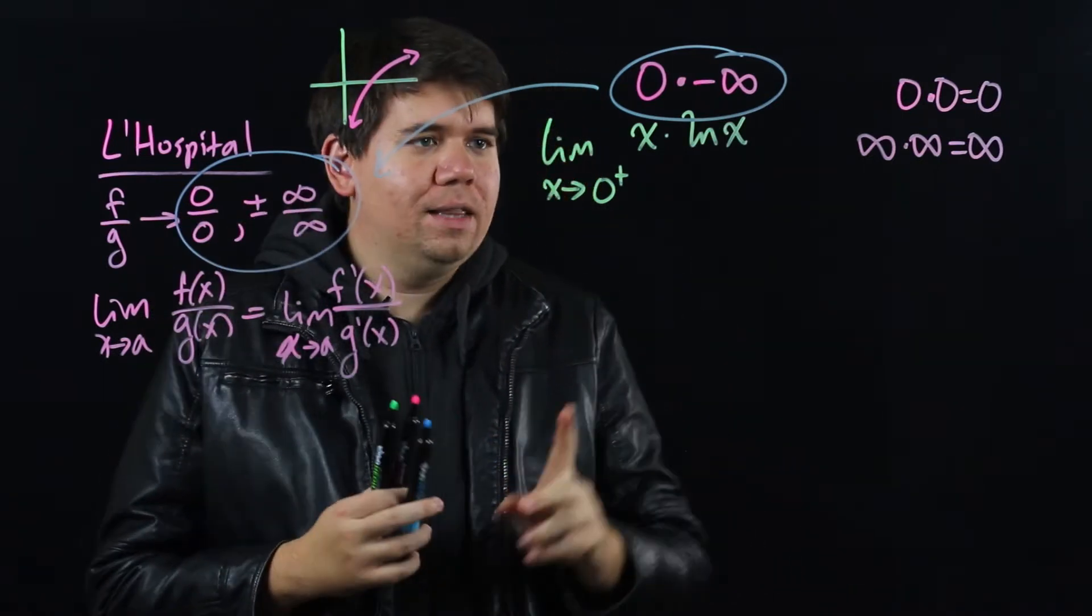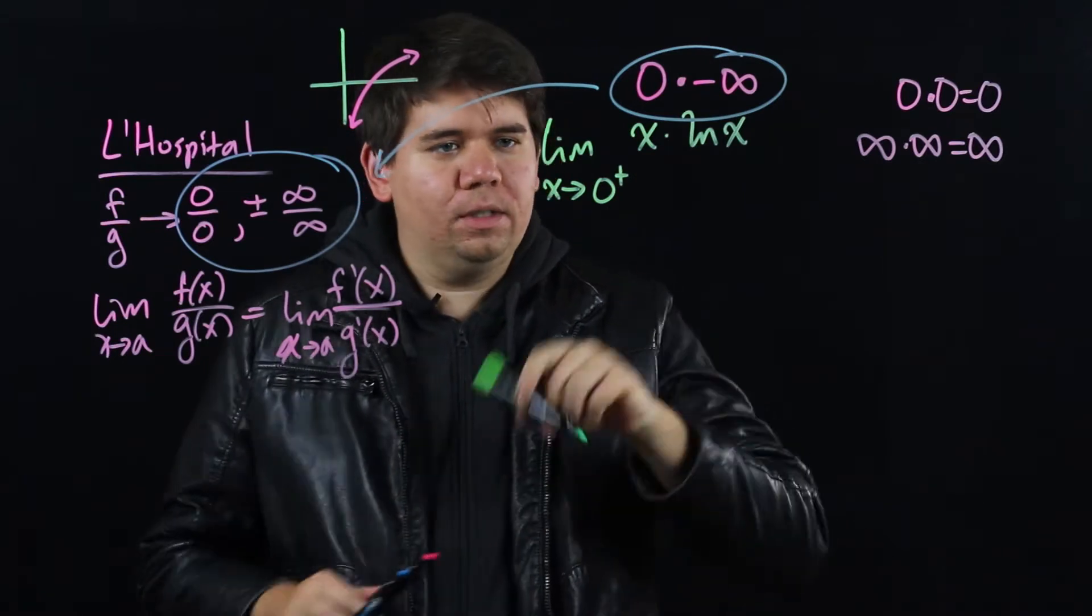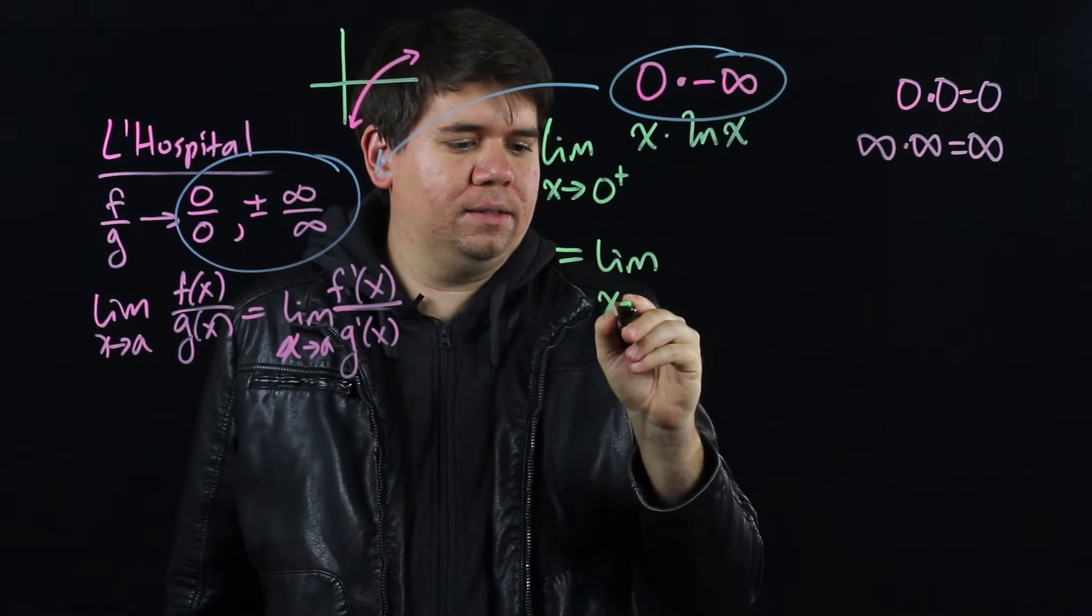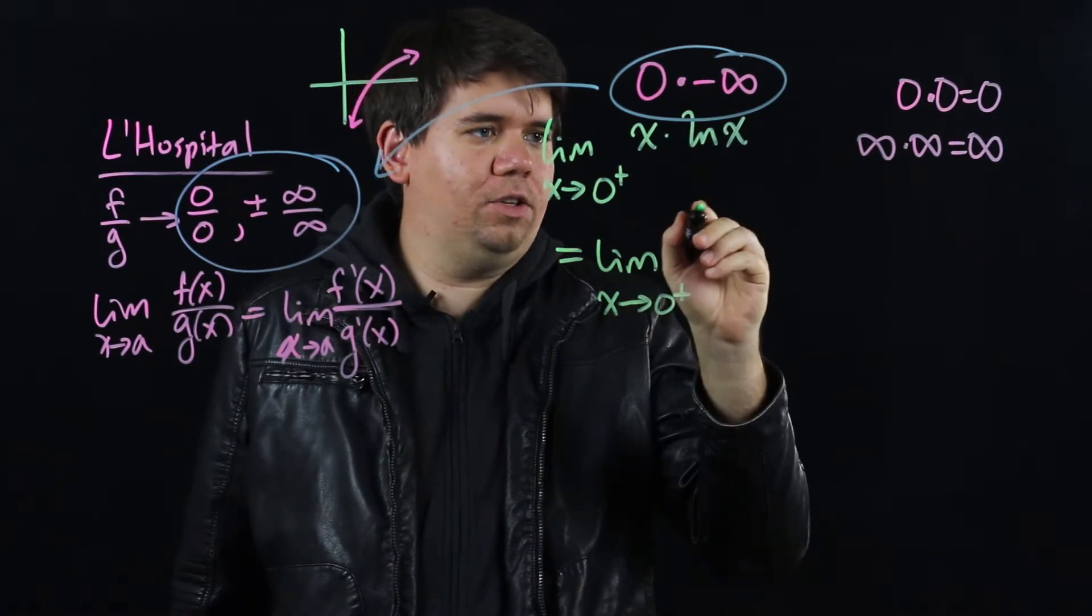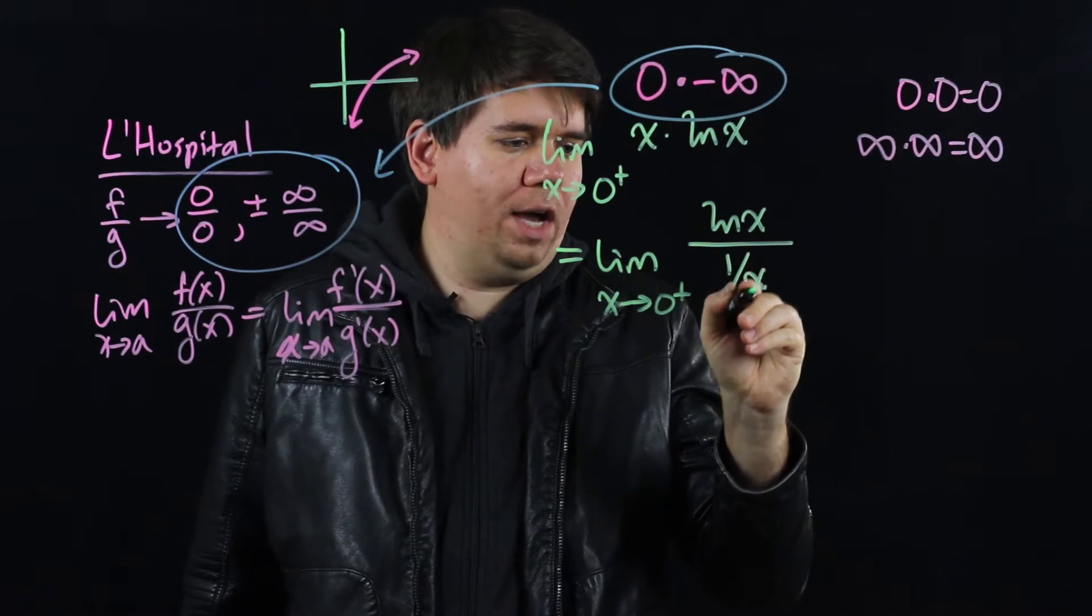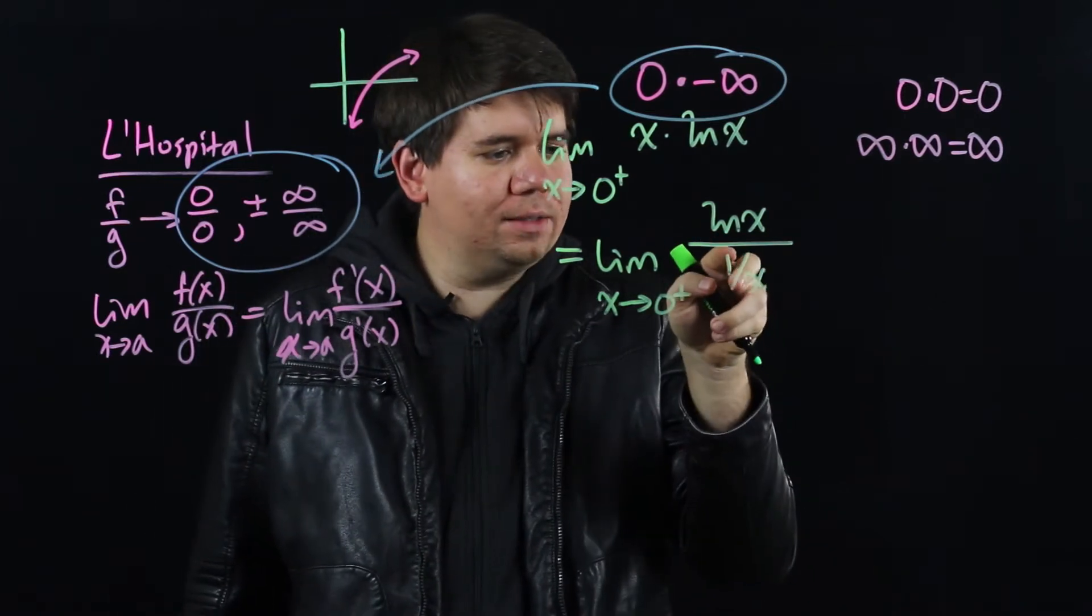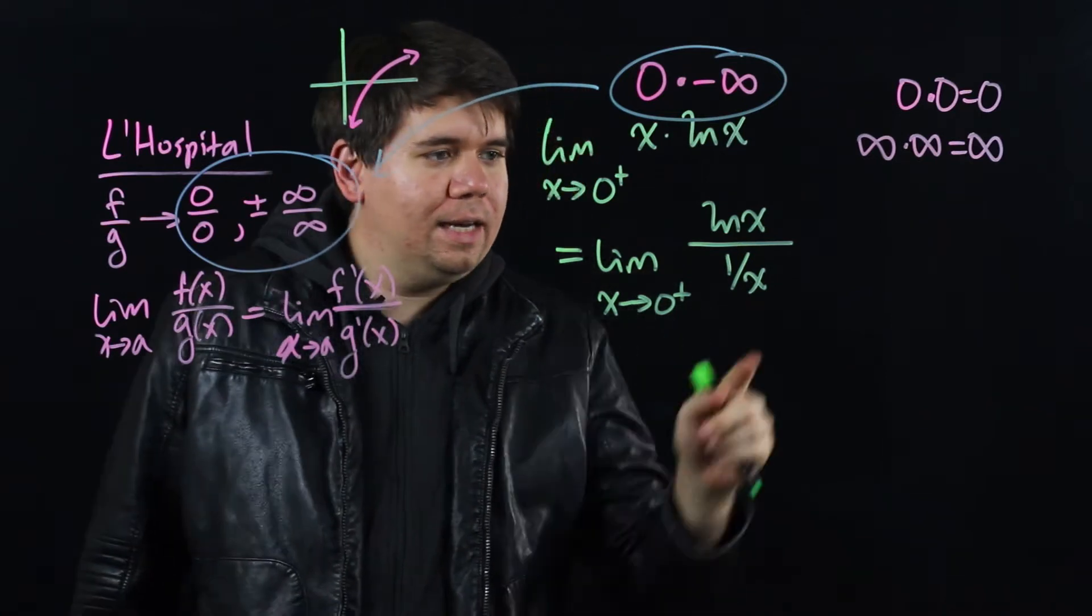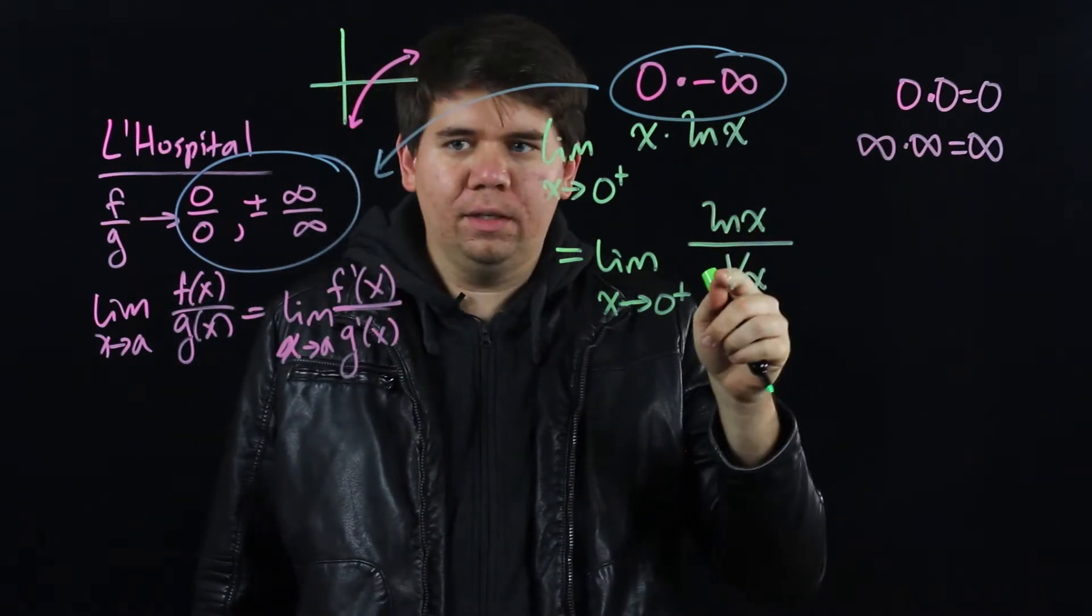Well, we can use the fact that multiplying is the same thing as dividing by the reciprocal. So multiplying by x is the same thing as doing the natural log of x divided by 1 over x, right? Dividing by 1 over x is multiplying by the reciprocal, so it's multiplying by x. Now it's the form of a fraction. This is hopeful.